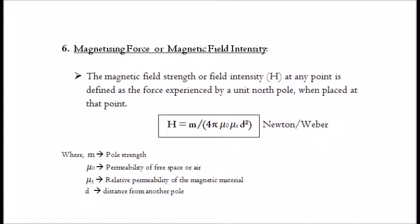6. Magnetizing force or magnetic field intensity. The magnetic field strength or field intensity H at any point is defined as the force experienced by a unit north pole when placed at that point. It is given by: H equals m divided by (4π · μ₀ · μᵣ · d²), where m is the pole strength, μ₀ is the permeability of free space or air, μᵣ is the relative permeability of the magnetic material, and d is the distance from another pole.